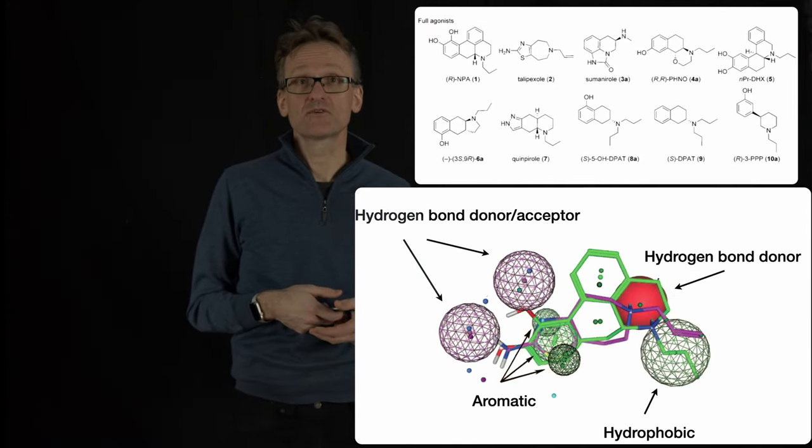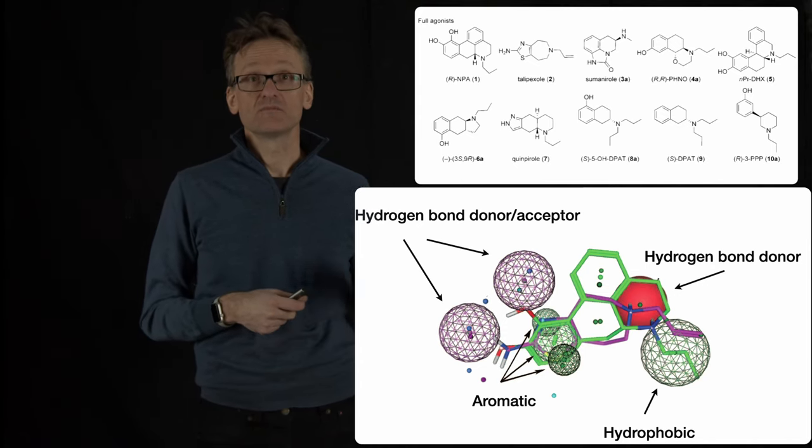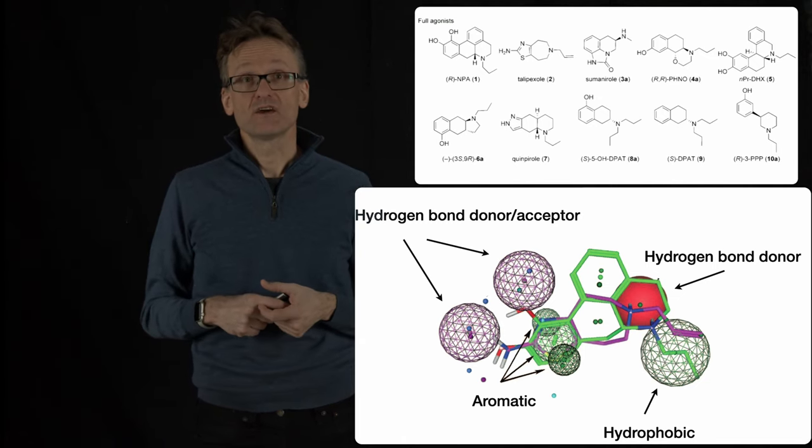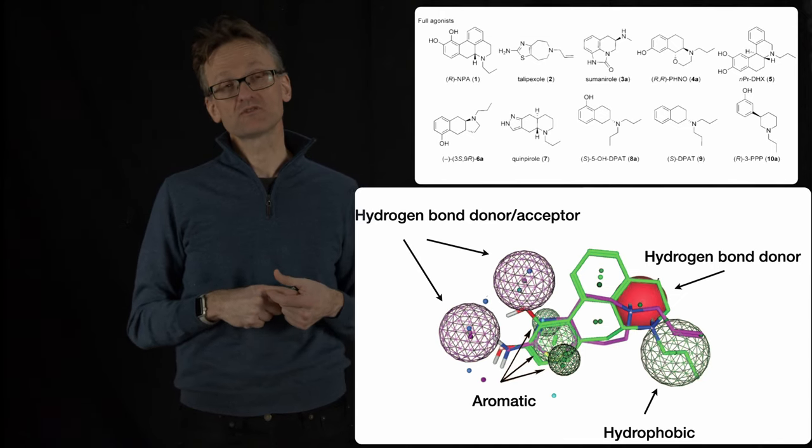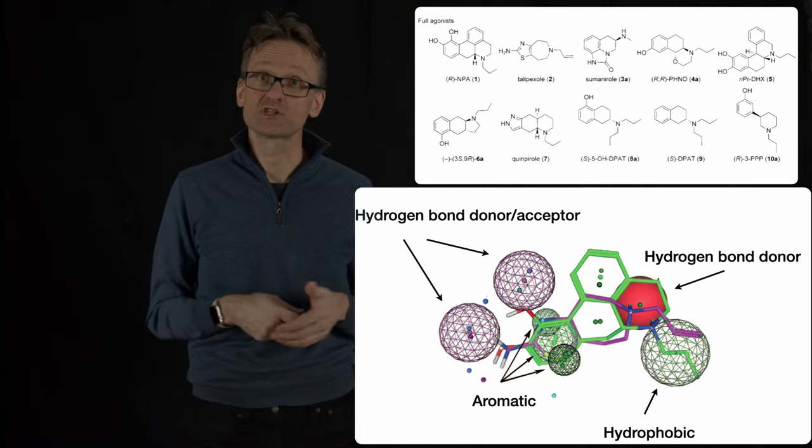So then people created a pharmacophore model here where we have the hydrogen bond donors and acceptors. The donor in red, the acceptors in purple. You have the aromatic rings here that we represented in green, and then we have that hydrophobic part that was the tail on the amine, and then the specific positions of that tertiary amine.